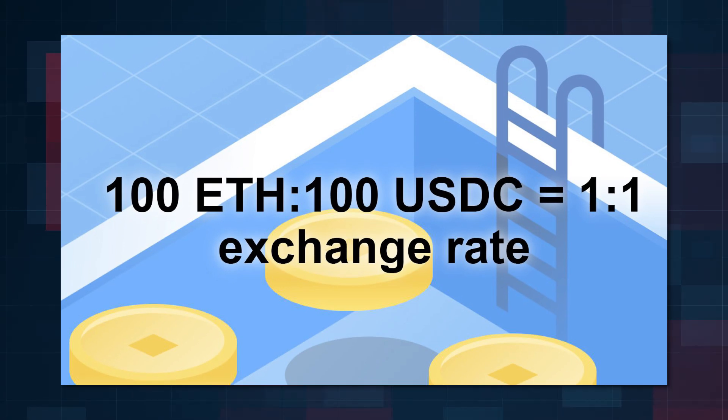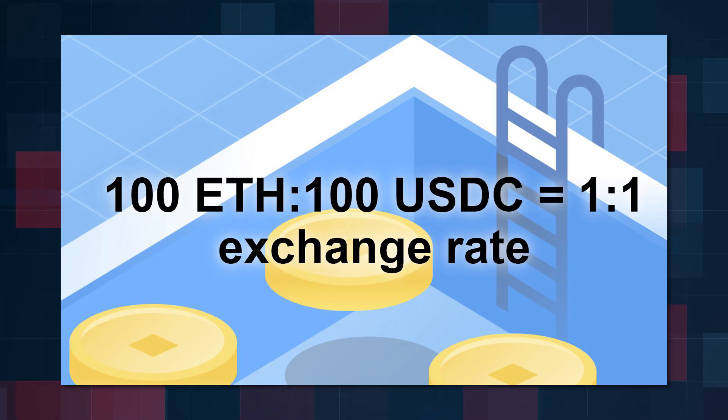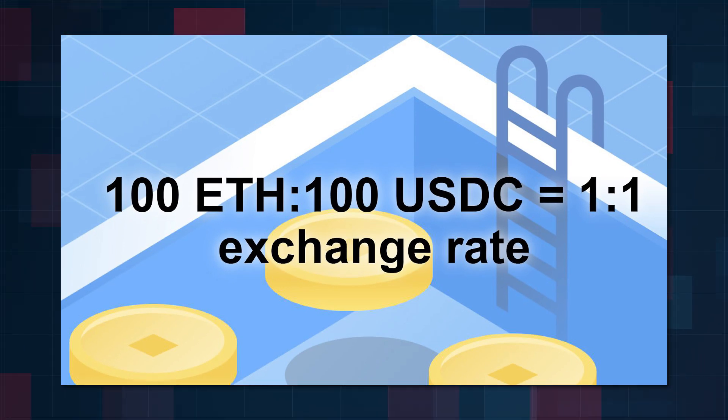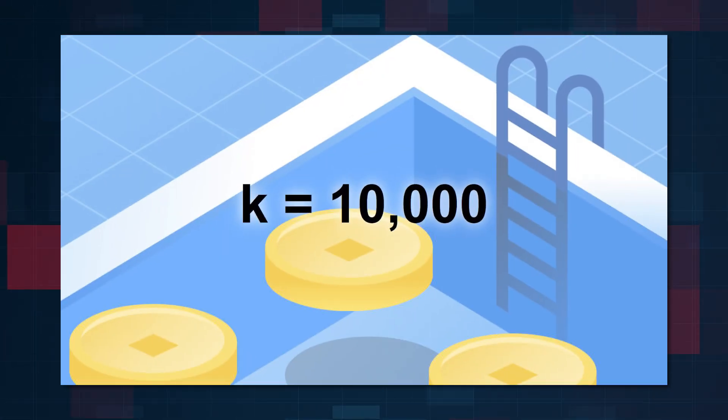For example, if a user wants to exchange Ethereum for USDC, they add a certain amount of Ethereum to the pool and receive a corresponding amount of USDC based on the calculated exchange rate. Let's consider a pool with 100 Ethereum (token A) and 100 USDC (token B), where the exchange rate on the primary market is 1 to 1.